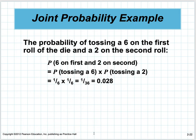The probability of tossing a 6 on the first roll of a die and a 2 on the second roll is an 'and' problem, so we multiply. Tossing a 6 is 1/6; tossing a 2 is 1/6. They're independent events, so we get 1 out of 36, or 0.028 — a 2.8% chance of that happening.